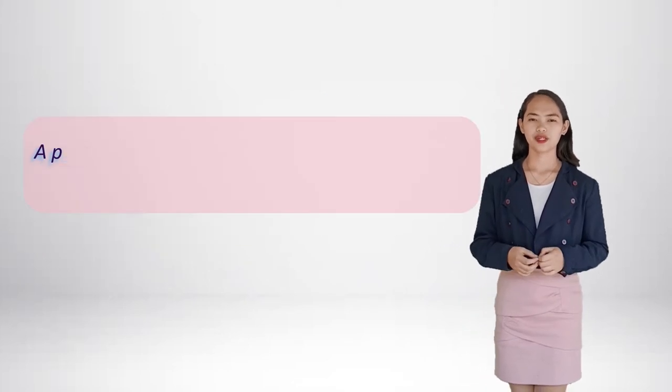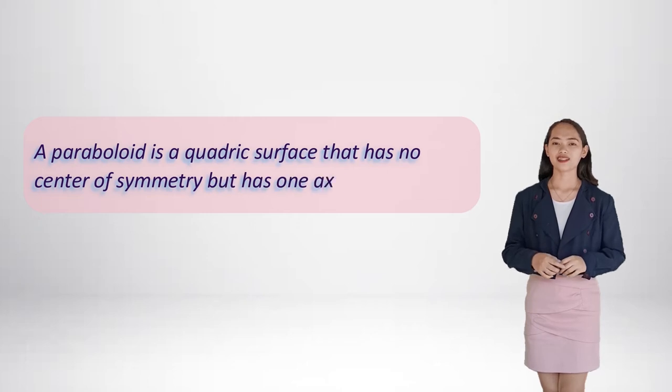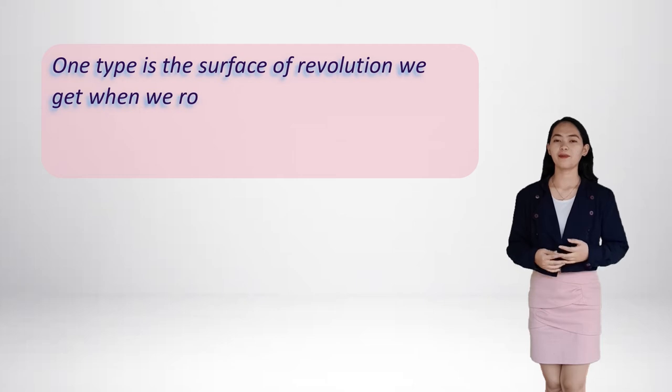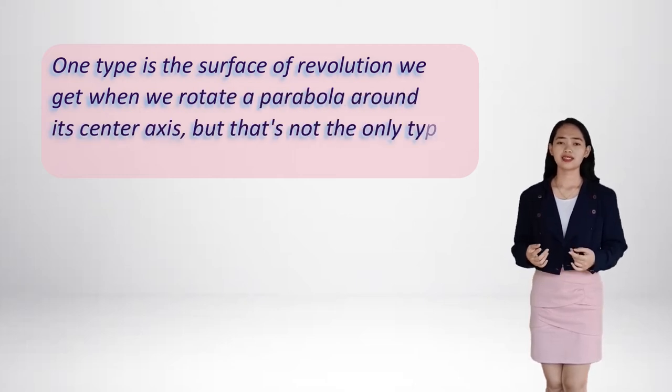So what is a paraboloid? A paraboloid is a quadratic surface that has no center of symmetry but has one axis of symmetry. One type in the surface of a revolution we get when we rotate a parabola around its center axis.